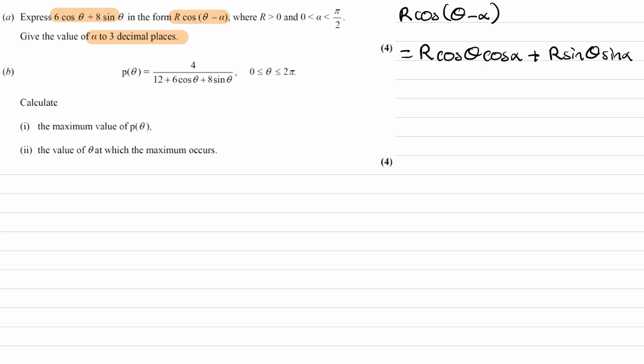Notice the similarities. We have cos theta here, cos theta there, and then we have sin theta here, sin theta there. So for these two things to be equal, that would mean that r cos alpha must equal 6, and similarly, r sin alpha must equal 8.